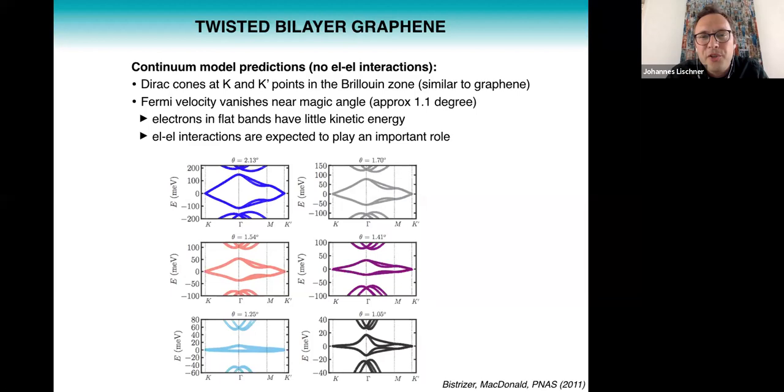In particular you get Dirac cones at the K and K prime points in the Brillouin zone. But the interesting difference is that they found that the Fermi velocity of these linear bands depends very sensitively on the twist angle. And in particular, if you look at the so-called magic angle which is about a twist of 1.1 degrees, you find that the Fermi velocity actually vanishes.